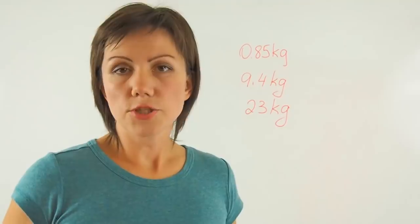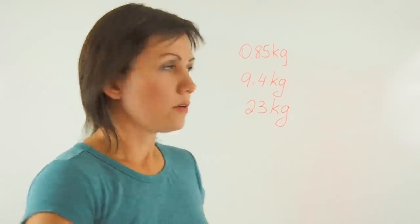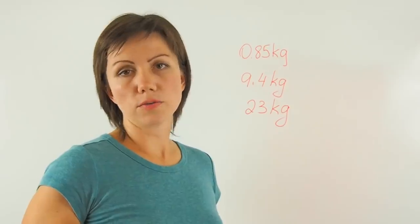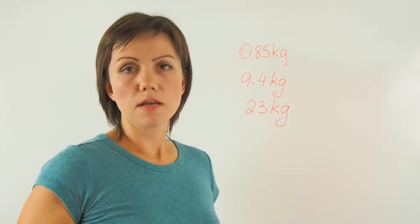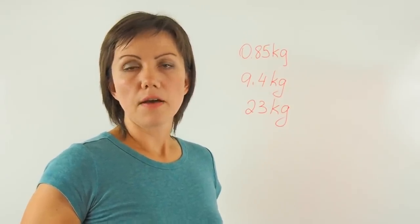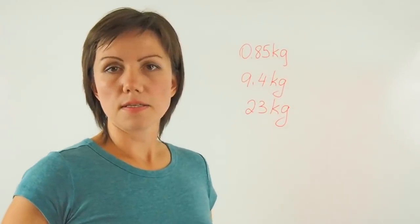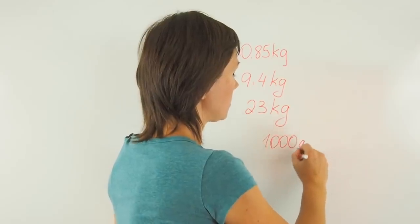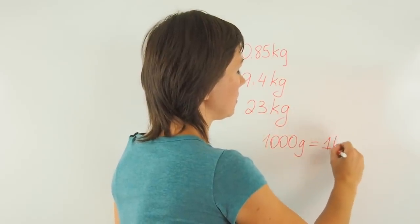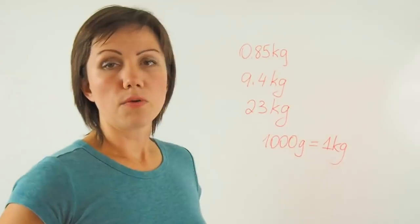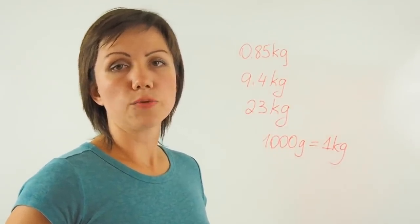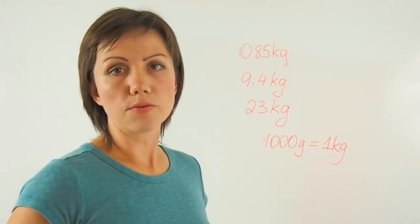In this question, you have three packages with the following masses, and you're being asked to find the total mass of three packages in grams. 1,000 grams is equal to 1 kilogram. So when I want to convert kilograms into grams, I need to multiply them by 1,000.